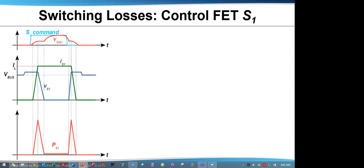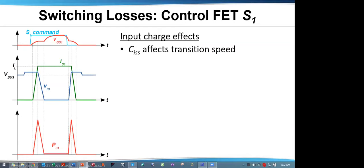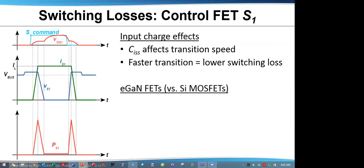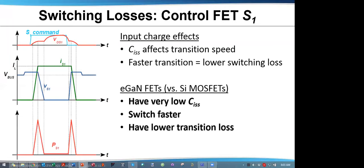Let's take a look at the switching loss of the high-side FET, S1. Shown here are typical waveforms. The blue S1 command is the control signal with the resulting red VGS gate voltage. Input charge effects: CISS has a direct effect on transition speed, and faster transition equals lower switching losses. When we compare GAN FETs with silicon MOSFETs, EGAN FETs have very low input capacitance CISS, switch faster, and have lower transition loss.